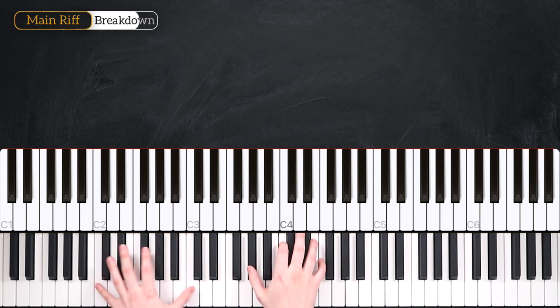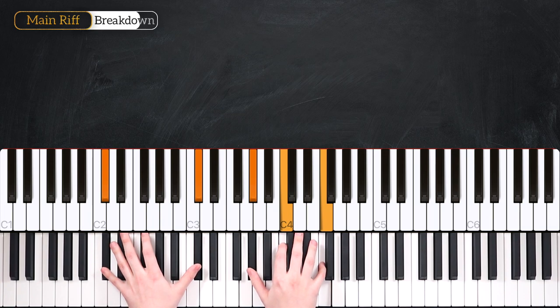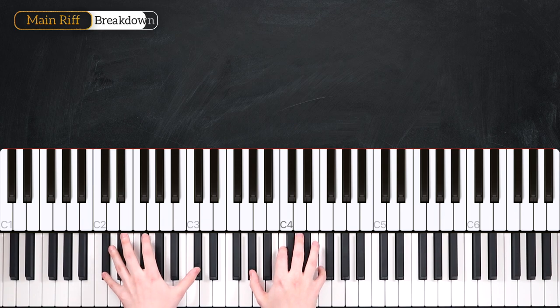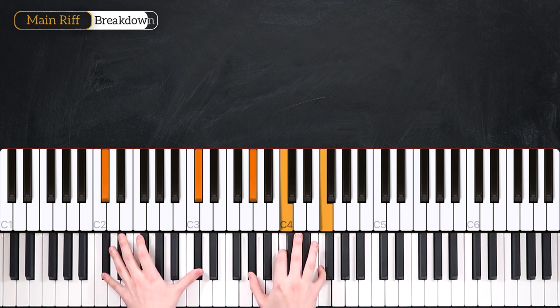Then we shift down to our Db in the left hand, Ab, C and F natural in the right hand. That's our Db major 7 chord. We're going to play that for one bar with the same rhythm. One and two and three and four and.